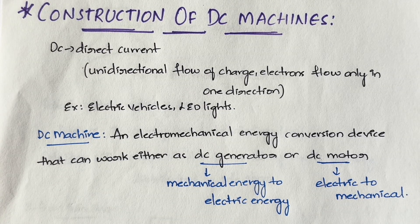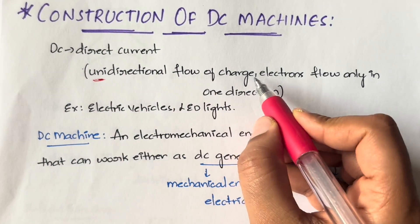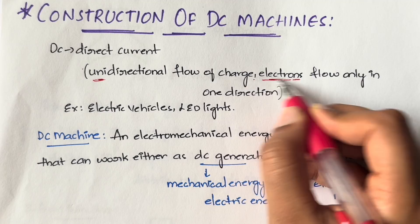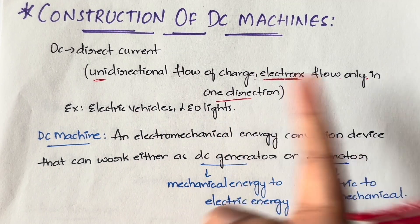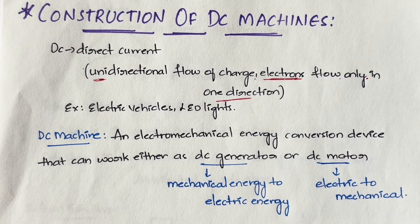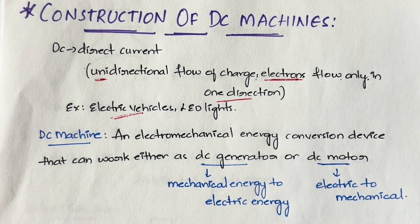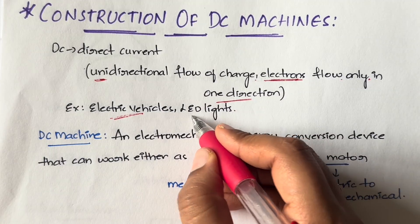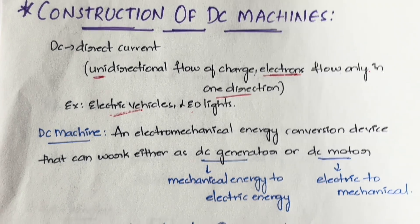First of all, what is DC? DC is direct current. Direct current means you will have only one direction — unidirectional flow of charge. Charge is nothing but electrons; the electrons will flow only in one direction, it is not bidirectional. In real life, DC current is used especially in EVs — electric vehicles — and also in LED lights in our houses.